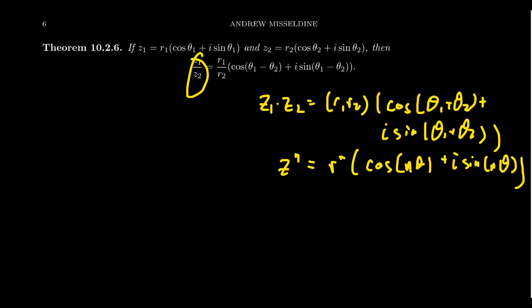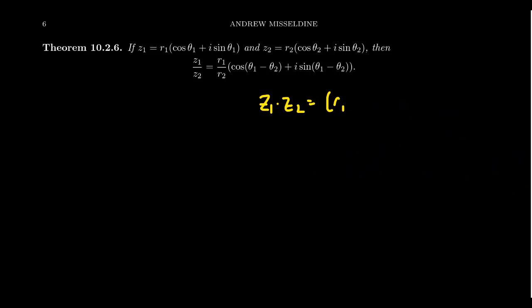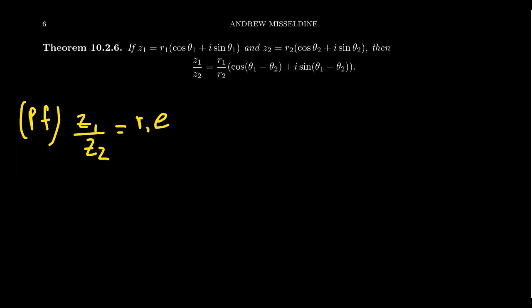The proof gets really complex using only trigonometric identities, since you'd need angle difference identities. Instead, we'll use Euler's identity. We didn't prove it in this lecture series, but with a little calculus it follows very easily from the Maclaurin series of sine, cosine, and e^x — but that's a conversation for another day.